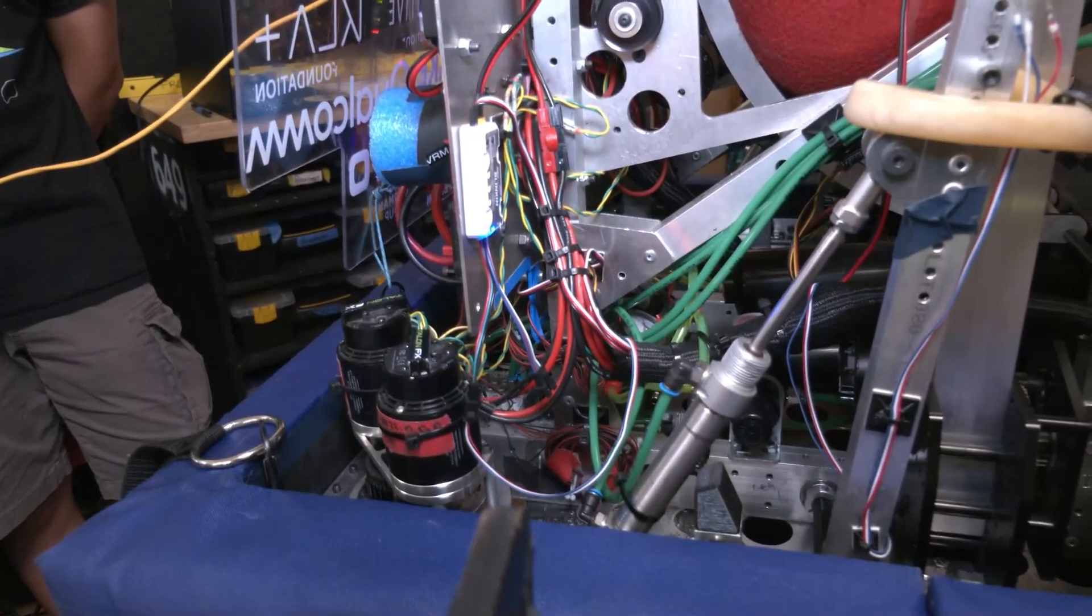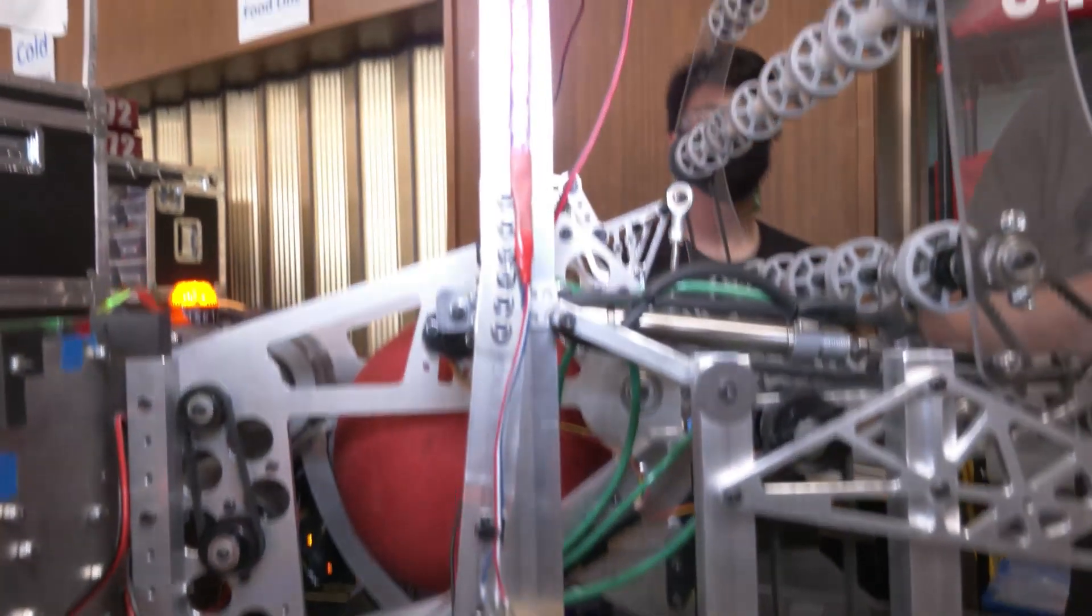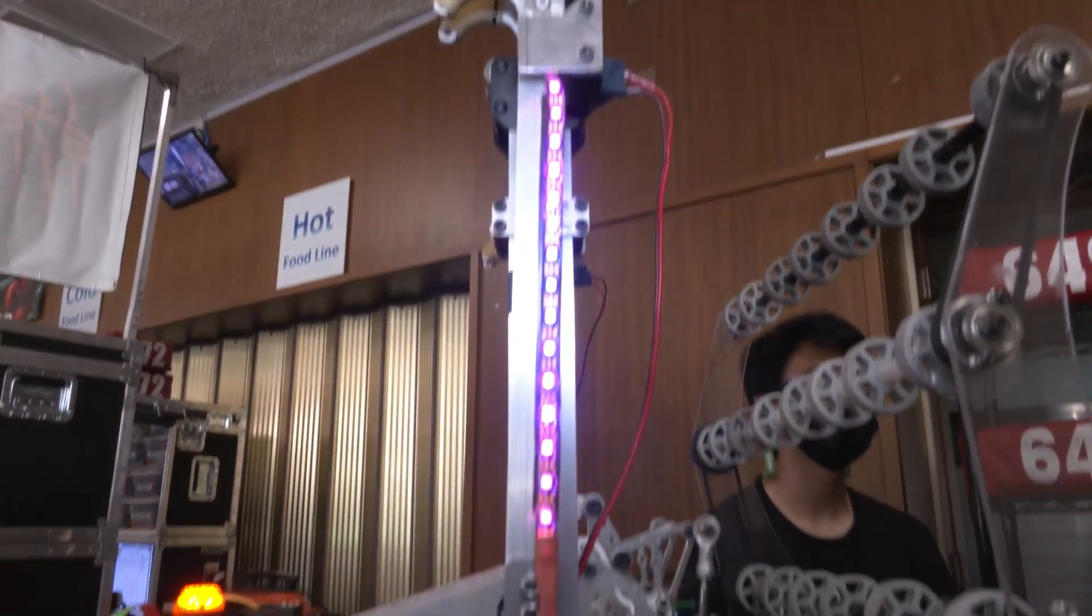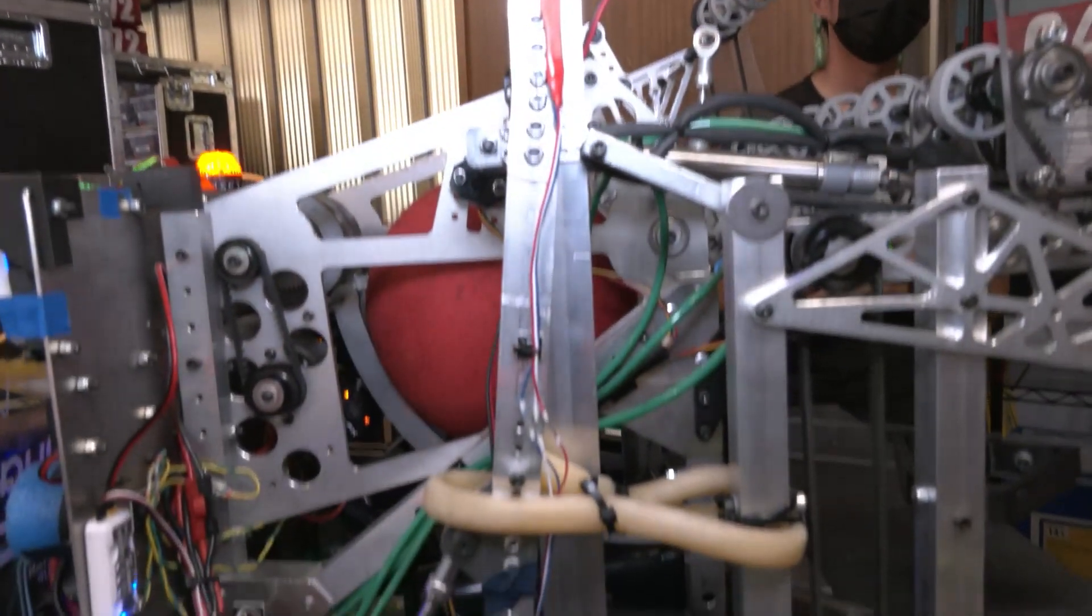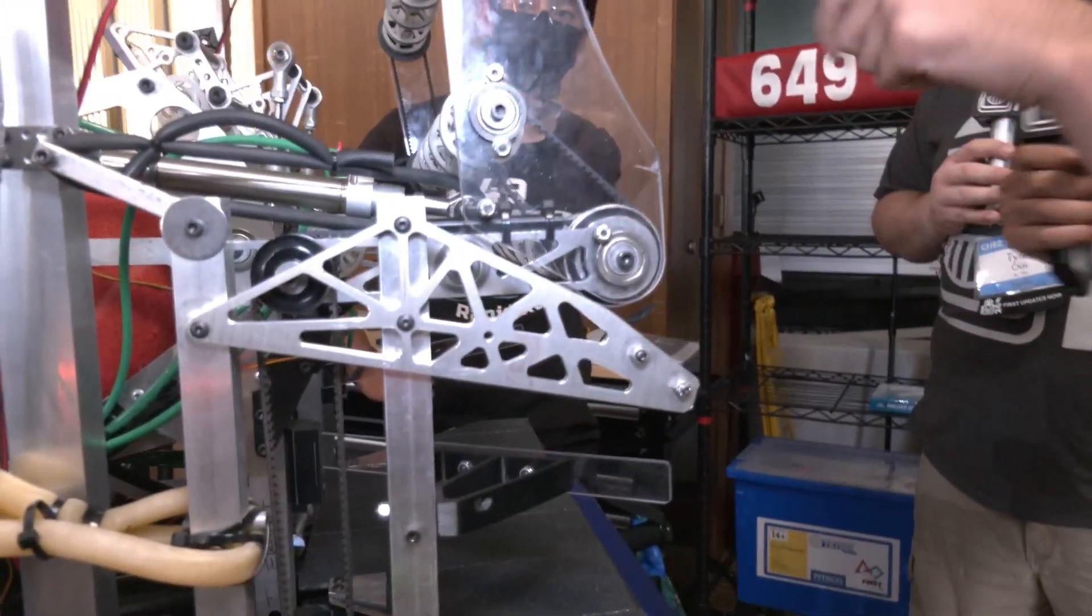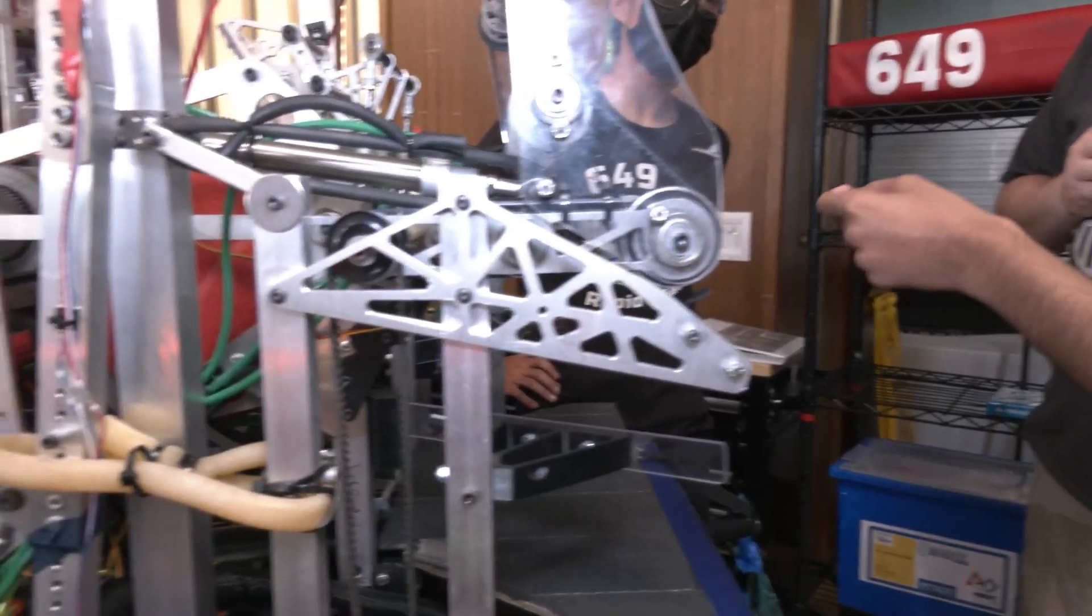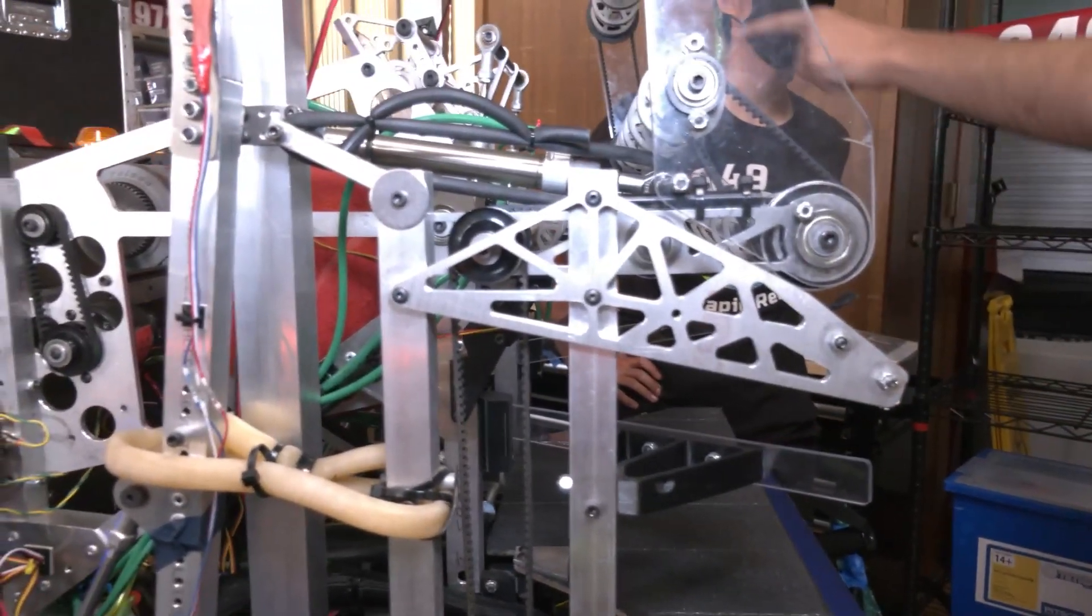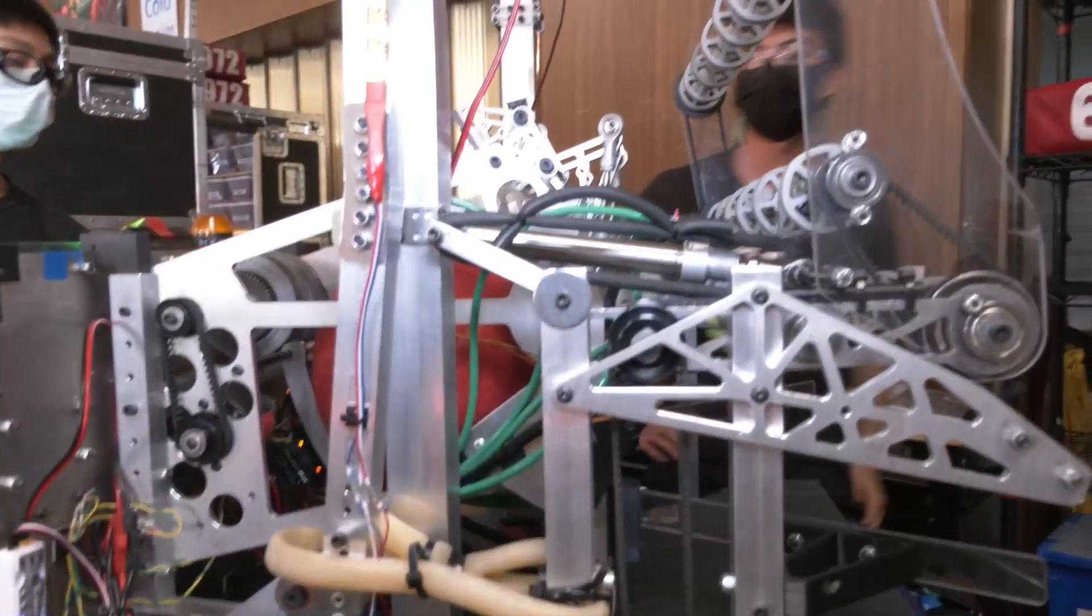One thing I want to ask you about, you do have some LED strips on the end here. Are you getting any sort of feedback from that for the drive team? We have two IR gates on our feeder. If both IR gates are filled, it'll be blue, and if only one is there, it'll turn yellow, as you can see right there on that side.